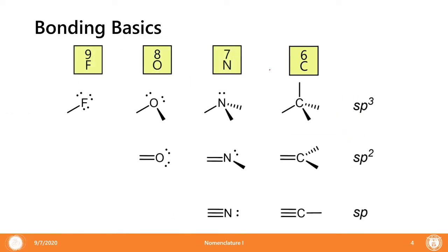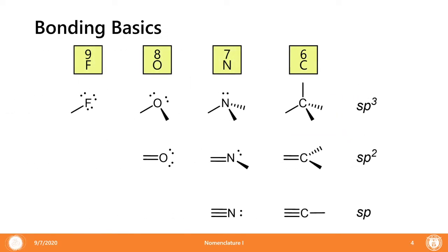Other atoms such as nitrogen also exhibit three bonds and exhibit a lone pair. Oxygen has two bonds and two lone pairs, while halogens like fluorine, chlorine, iodine, and bromine have one covalent connection and three lone pairs.